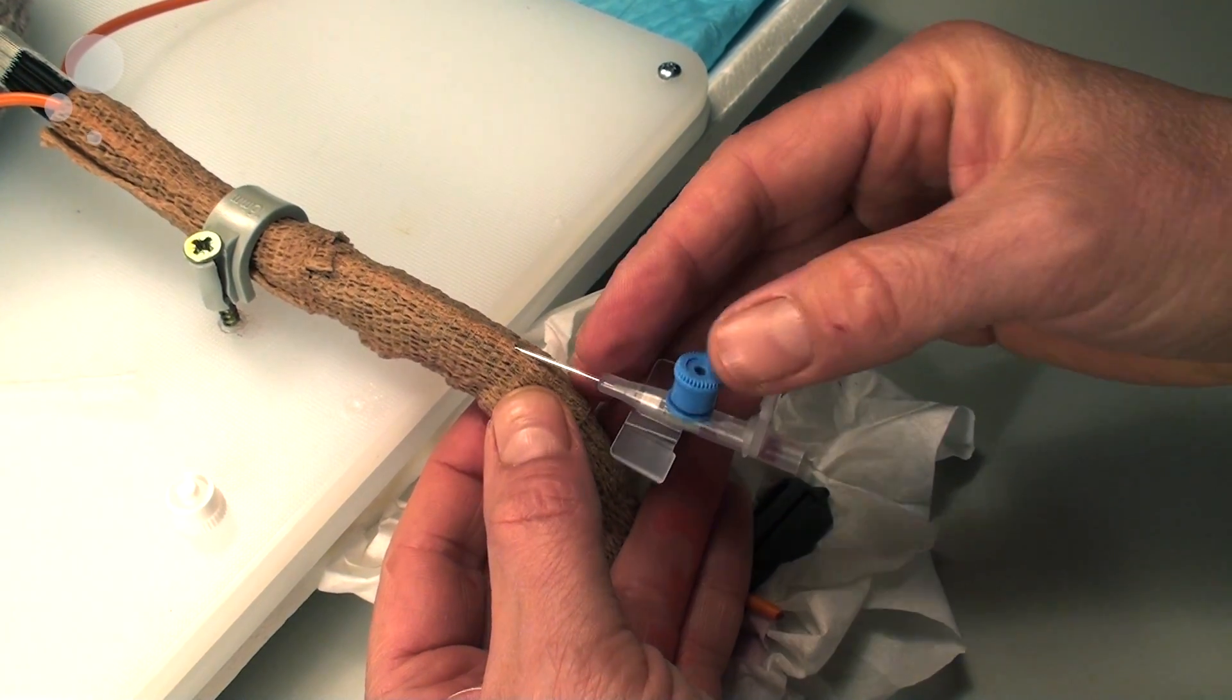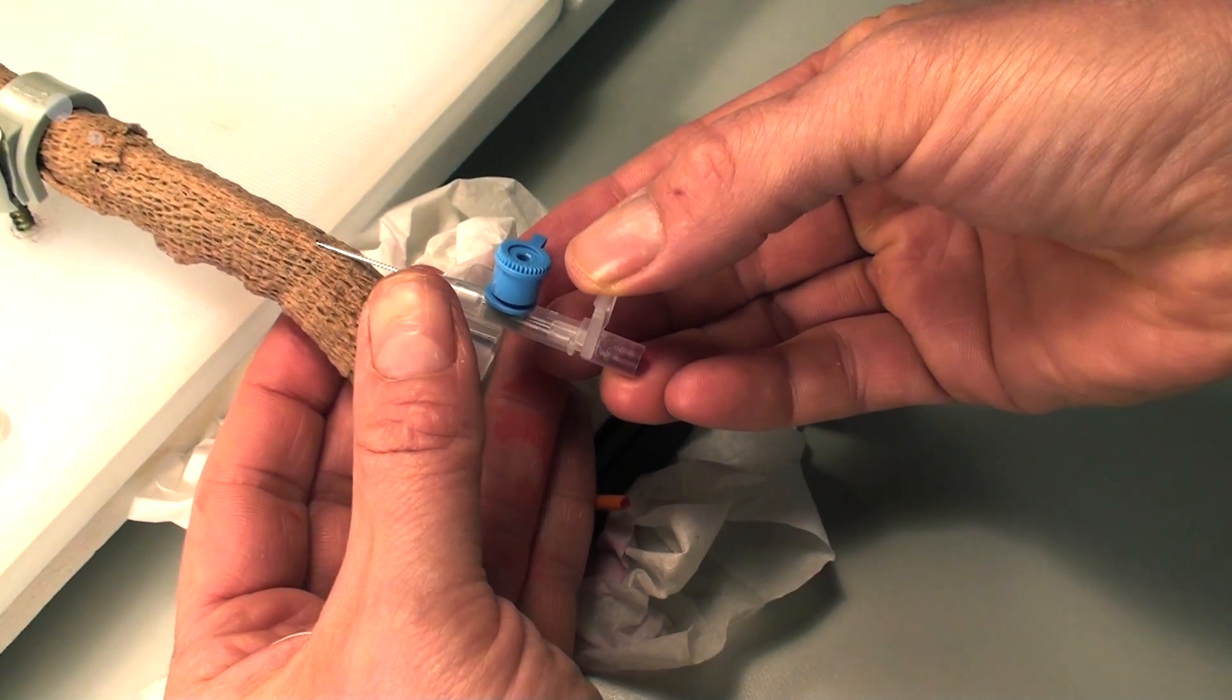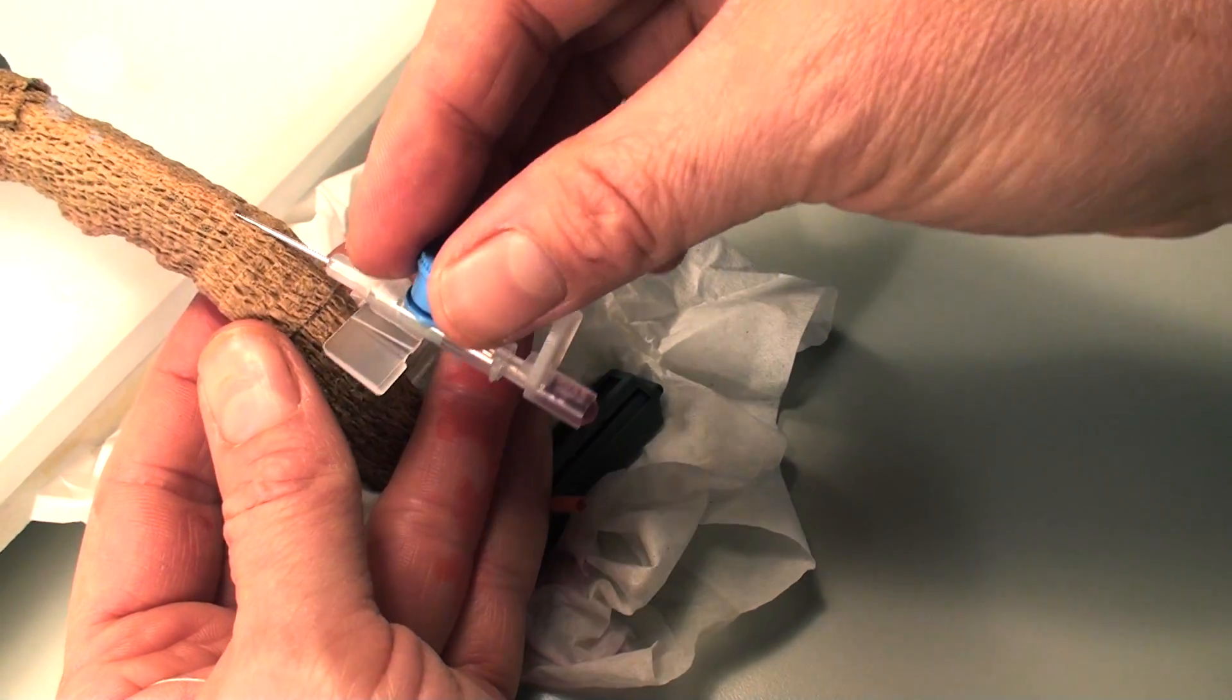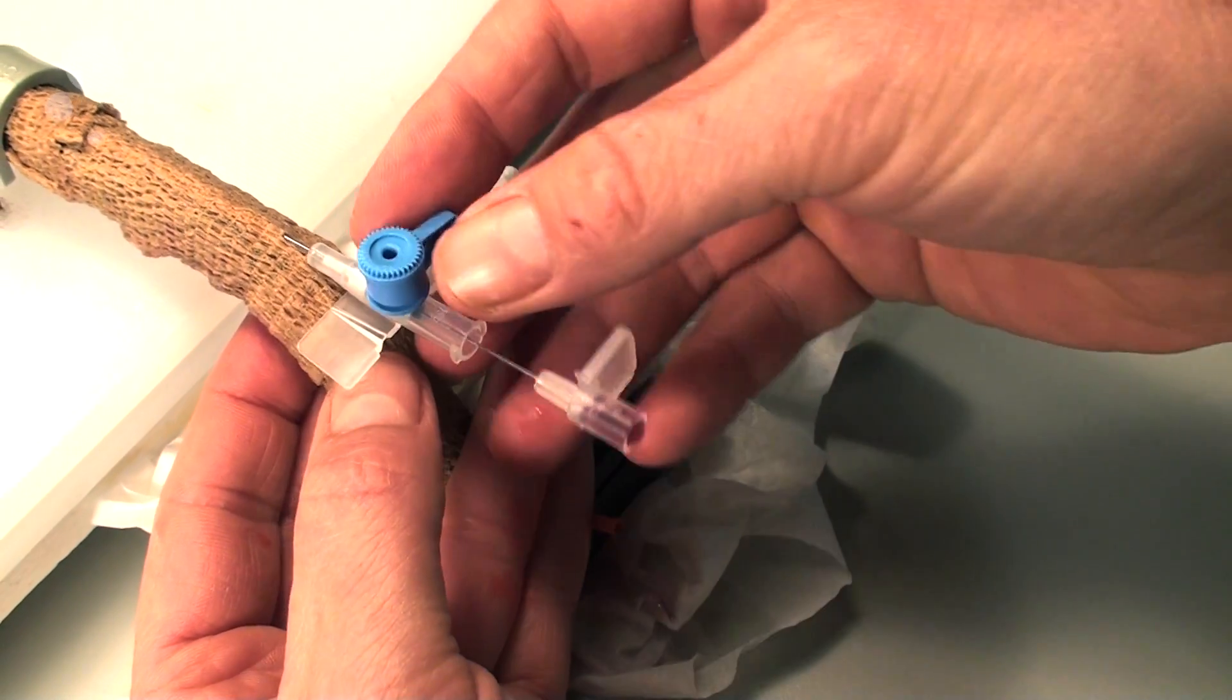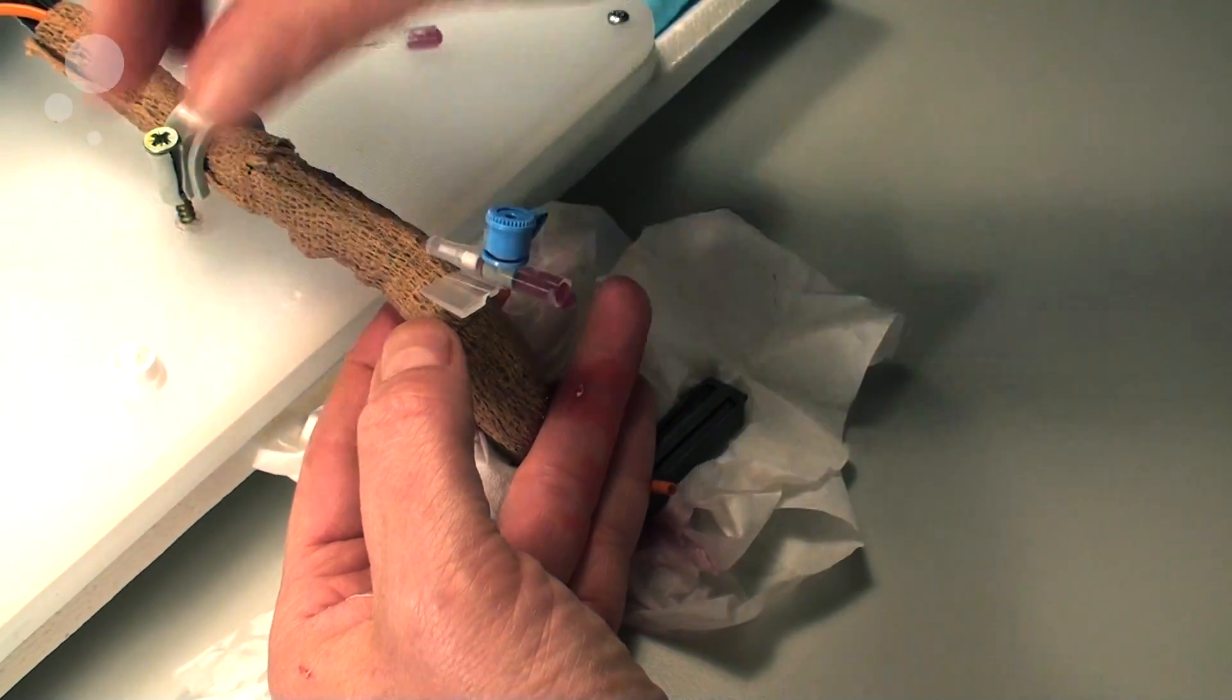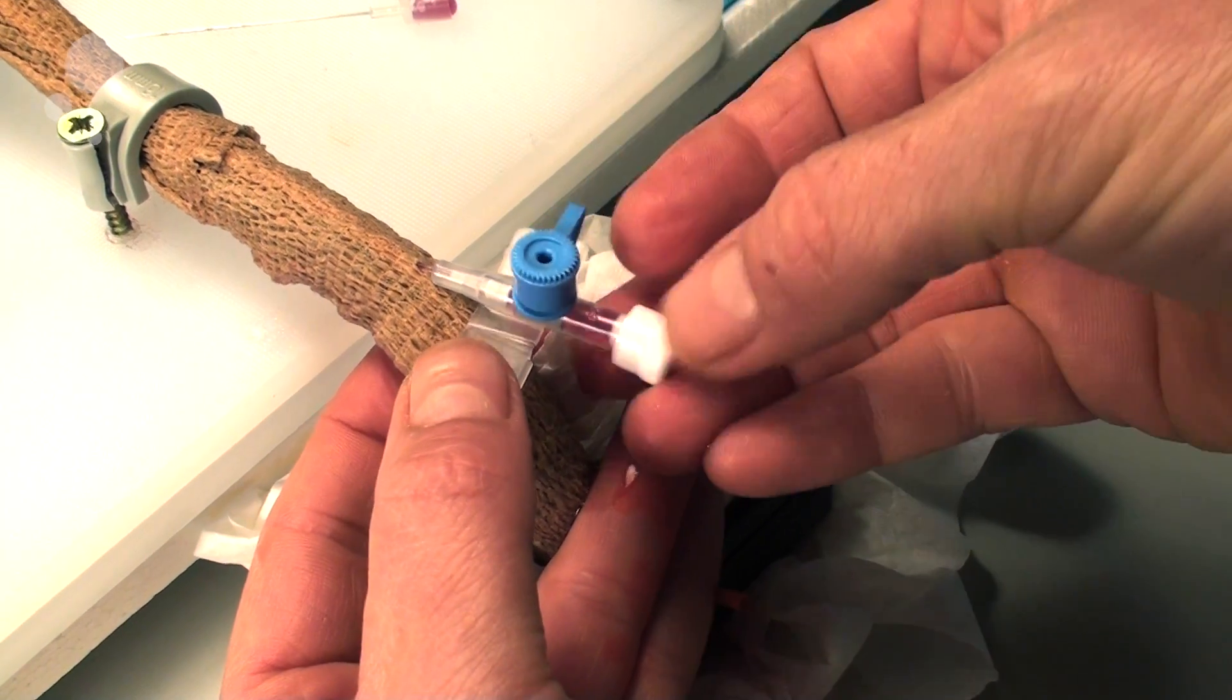When the blood starts flowing in the catheter here, you will take back the tip of the catheter needle. Introduce the catheter slightly a little more and a little more. Then you will remove the needle entirely and put on the stopper to prevent the blood from spilling out of the catheter.